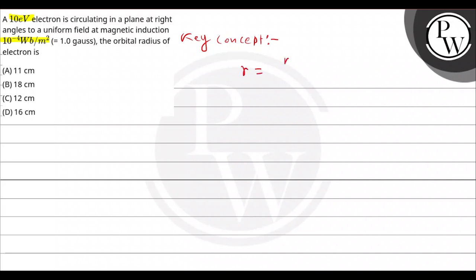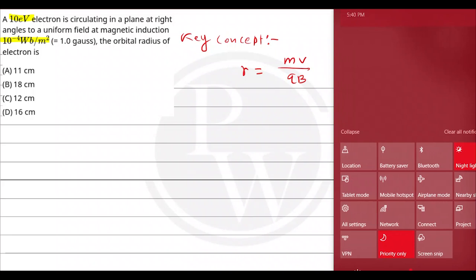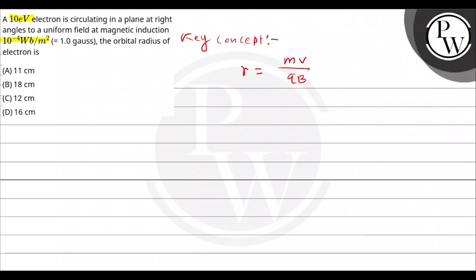Orbital radius is given by r = mv/(qB). If a charged particle moves in a magnetic field, the force is given by F = qv cross B. Here we have to find the orbital radius of the electron. We need to find the speed of the electron. Magnetic field is given and as it is an electron, the charge is also given. So we have to find v.